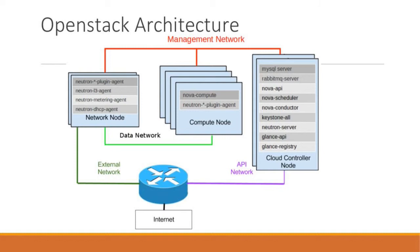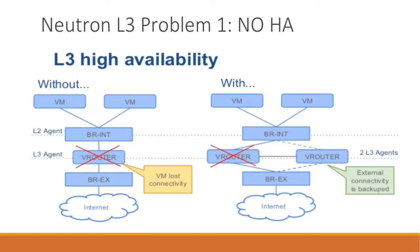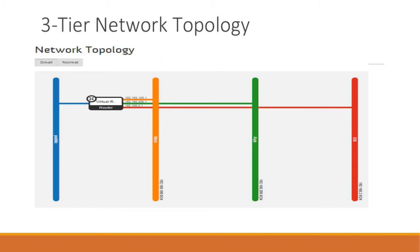With the Juno release going forward, that has been enabled — I'll discuss the solution later. The second problem: Neutron enables users and admins to create their own network topologies. A typical topology is the three-tier setup: web service at the front end, application in the middle layer, and database at the back end. These three tiers are connected using a virtual router, so traffic going from one network to another has to go through the virtual router.